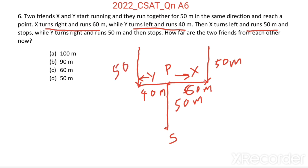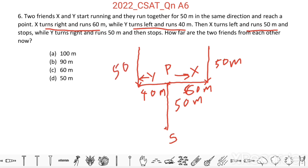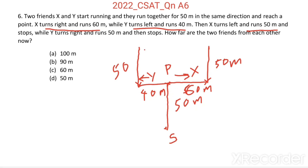How far are the two friends from each other now? The distance between these two is 40 plus 60, equal to 100 meters.